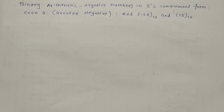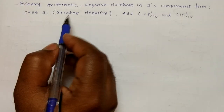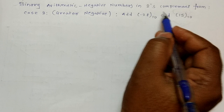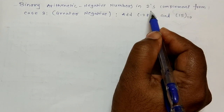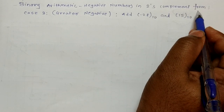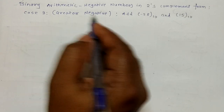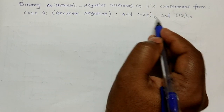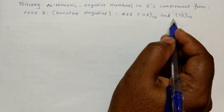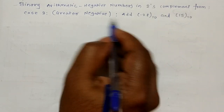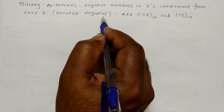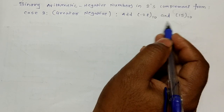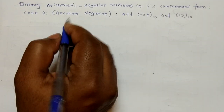Hello friends, in this lecture we have to see Case 3 for binary arithmetic, where the negative number is represented in two's complement form. In Case 3, out of the two numbers whose addition we have to perform, the greater number is negative. So how do we take the addition of such numbers?